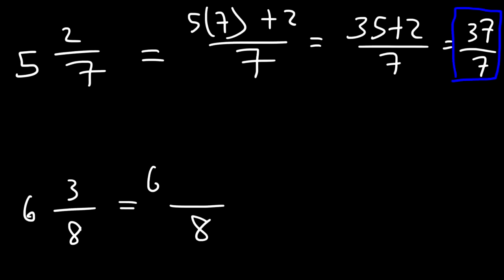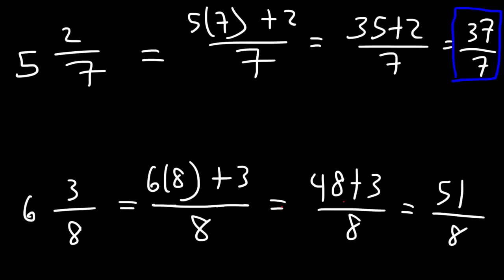For the last one, let's rewrite the 8, and then it's going to be 6 times 8 plus 3. 6 times 8 is 48, 48 plus 3 is 51, so the answer is going to be 51 over 8. So now you know how to convert a mixed number into an improper fraction.